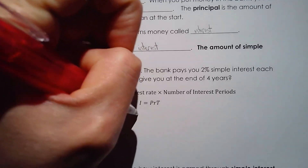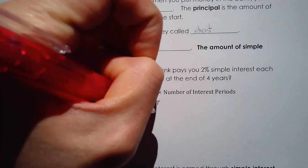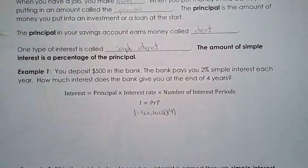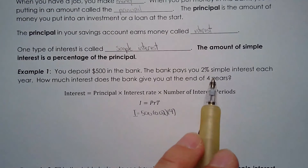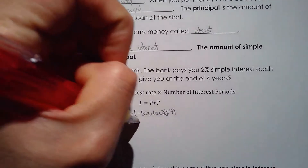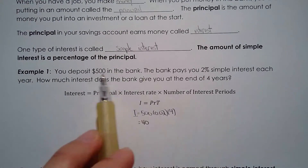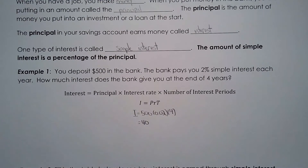I equals PRT. The principal is $500, the rate is 0.02 — that's 2% — times 4, because that's 4 years at 2% per year. If you do the math, you'll get $40, which makes perfect sense because 2% of 500 is $10. At the end of each year you get $10 from the bank. Over 4 years, that's $10 plus $10 plus $10 plus $10, which means $40 from the bank.